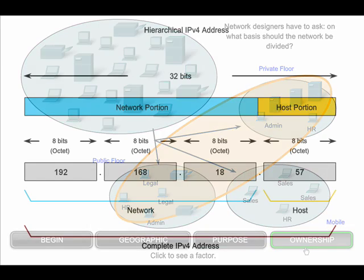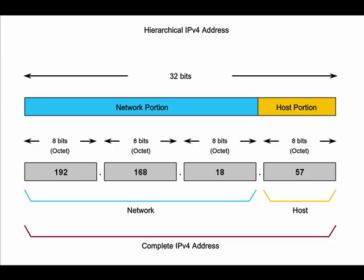IP addresses are hierarchical in nature. Part of the address represents the network, and part represents a specific host on the network. An IPv4 address is four bytes, which is divided into two parts: the network portion and the host portion. In this example, the first three bytes of the address is the unique identifier of the network — in this case the 192.168.18 network — and the last byte is the unique identifier of the host within that network, in this case the .57 host. In this network, all devices will have the same first three bytes in the address. Routers forward packets from one network to another by only using the network portion of the address. When the packet arrives at the router where the destination host resides, the whole address — both the network portion and the host portion — will be used to deliver the packet to the right host within the network.